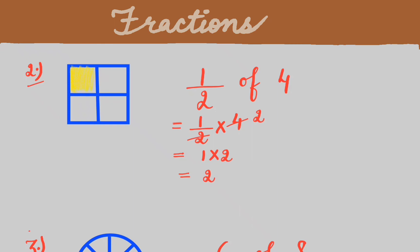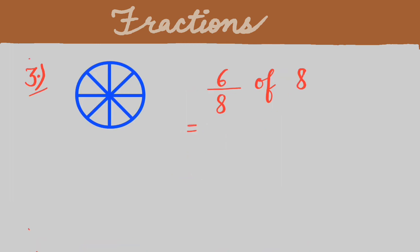We can shade any 2 parts. This is one part and this is the second part — you can shade any other parts also. Third question: we have to shade 6 by 8 of 8. First of all we will solve it: 6 by 8 into 8, the 8 is cancelled, so 6 into 1 gives us 6.